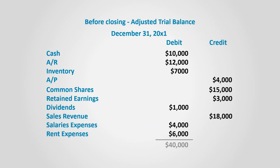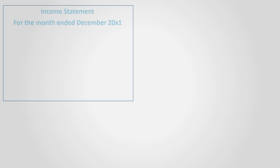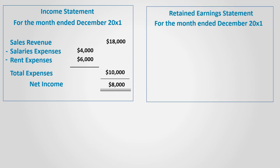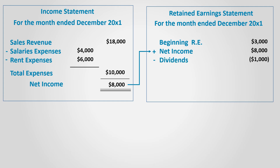Let's take a comprehensive example to see how closing entries are done and how they affect the different accounts. Assume we have the following adjusted before-closing trial balance. From the trial balance, we prepare the basic financial statements. The income statement includes revenues and expenses. Revenues are $18,000; subtracting salaries expense and rent expense totaling $10,000 gives $8,000 of net income. The retained earnings statement starts with a beginning balance of $3,000, adds net income of $8,000, and subtracts dividends of $1,000, giving an ending balance of $10,000.